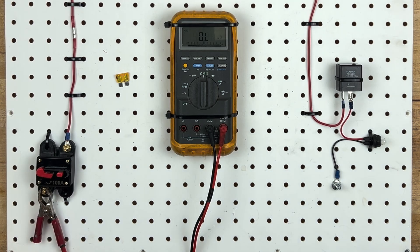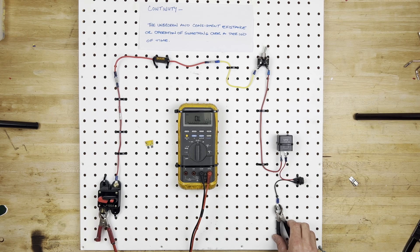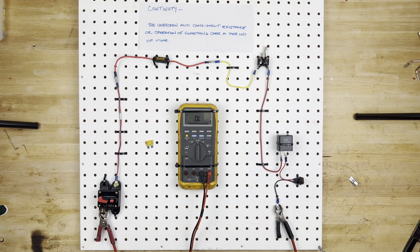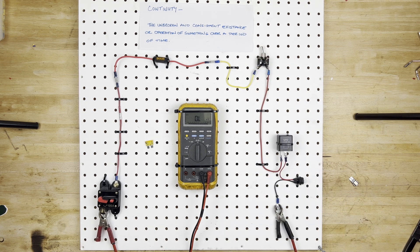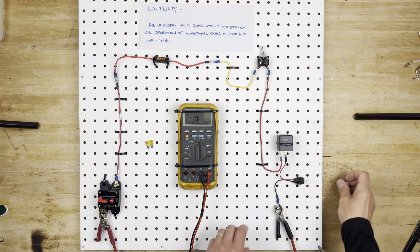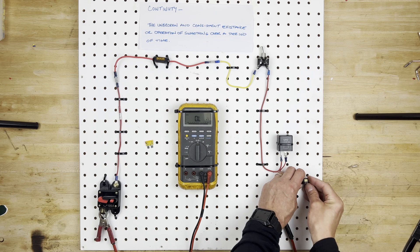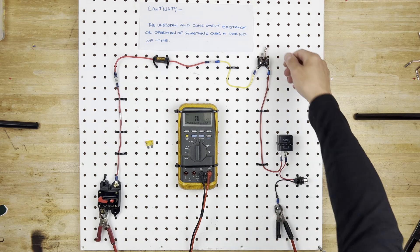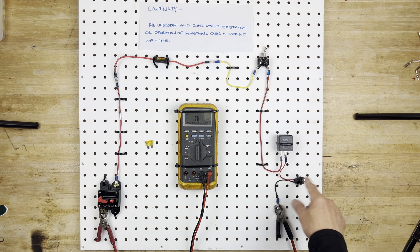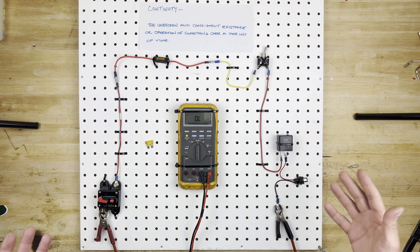We'll put power on this side, we'll put the ground on this side, and sure enough the bulb is blinking and it's controlled by the switch. So at this point we can actually throw our LED bulb back in and it will actually work just fine. It just doesn't show continuity going through it because it has a little circuit board in there that's preventing it.